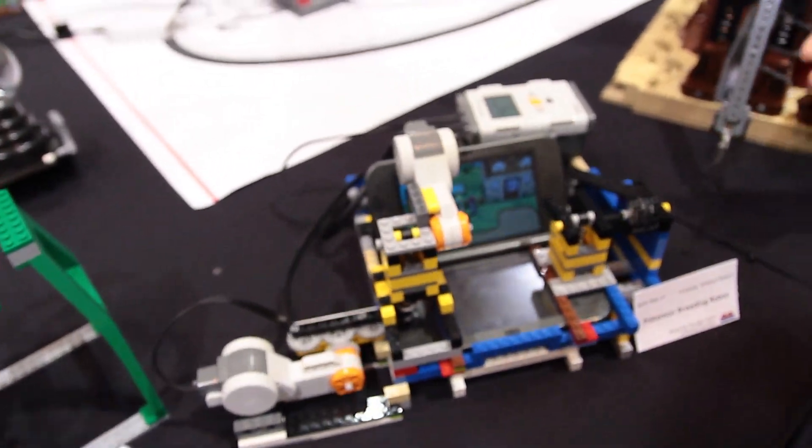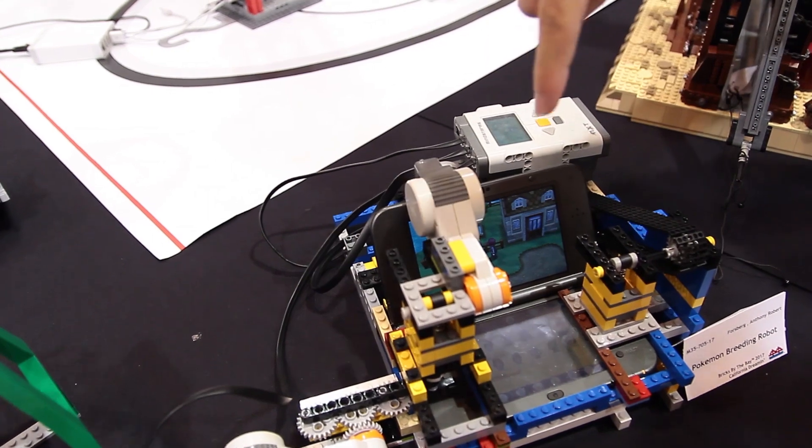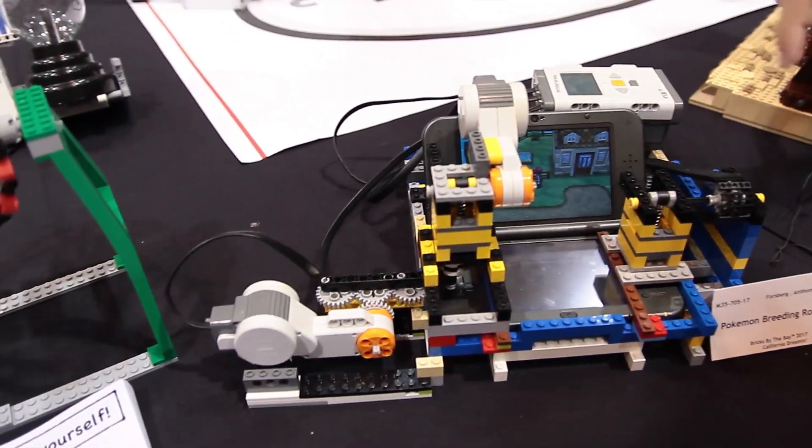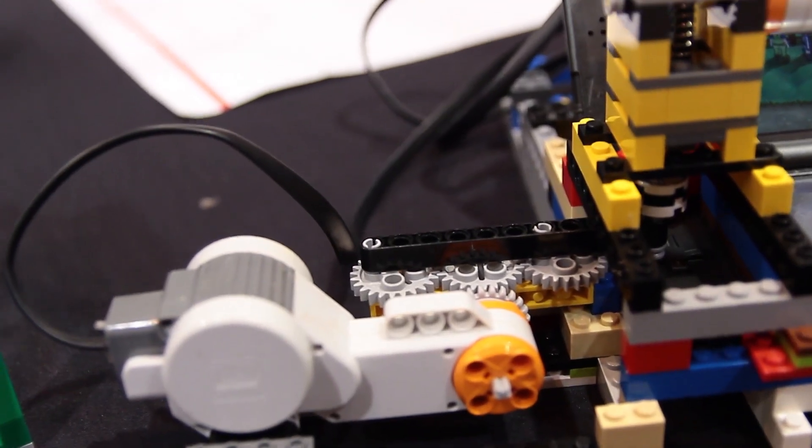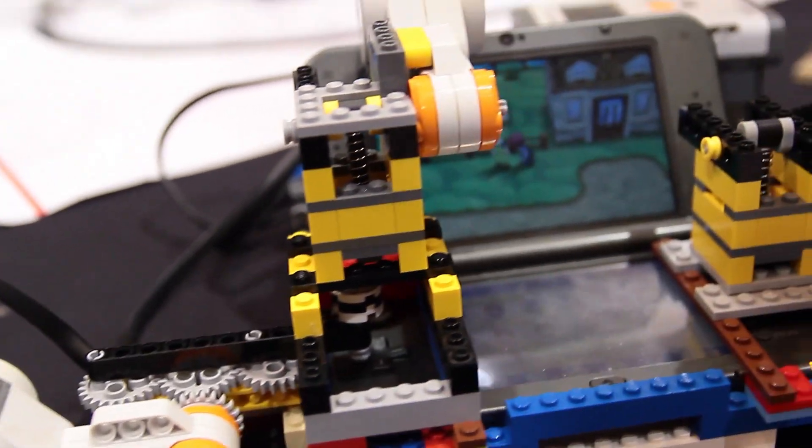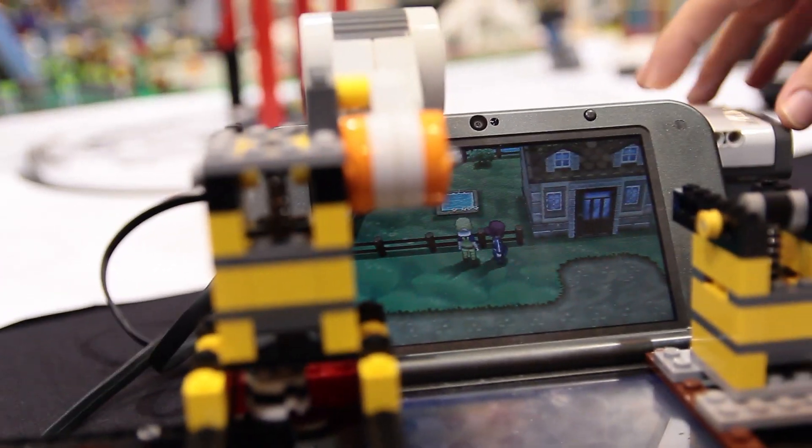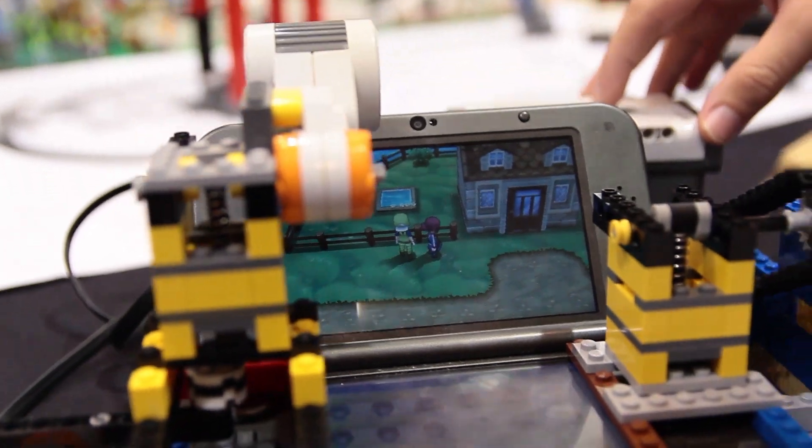Basically what it does is it's programmed to push buttons and make my character walk back and forth to collect Pokemon eggs. Right now it's just finished its program to collect eggs, so I'm going to run another program to hatch those eggs.